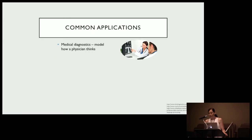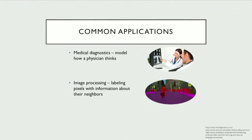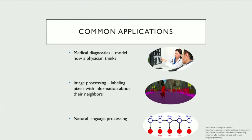Some common applications: Medical diagnostics — physicians love these because they model how a physician is taught to think: given these input categories, what are my probabilities for an output? Image processing is another application — for example, labeling pixels. If I know one pixel belongs to a person, and an unknown pixel is right next to it, that gives causal input into my assessment. And natural language processing — given that I was preceded by a verb and two words ago by a noun, what am I likely to be as a part of speech?